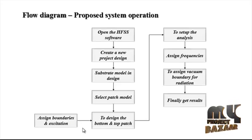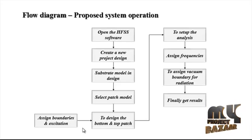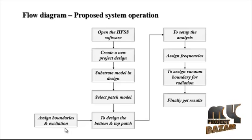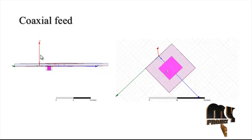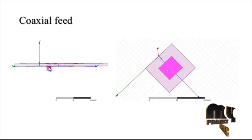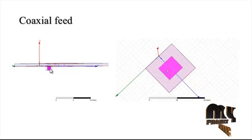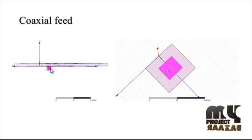For excitation, we are using coaxial feeding with wave port analysis. The coaxial feed is given from the top to the bottom of the antenna. The coaxial probe consists of an inner pin — coax pin and coax out — and this is called a coaxial feed using wave port excitation.